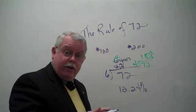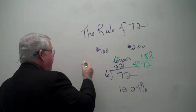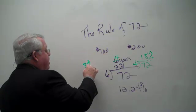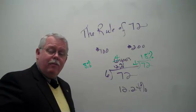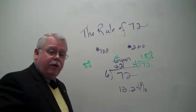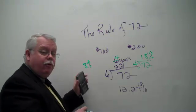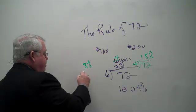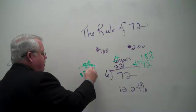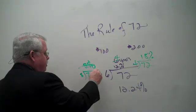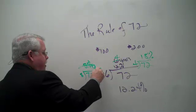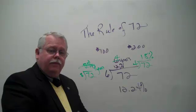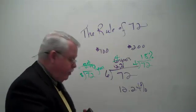We can turn it around the other way too. We can say: if I can earn 8% on my money, how long will it take my money to double? If I put $100 in the bank today earning 8%, how long will it take to grow to $200? Eight into 72 — it takes nine years. Just a real rough rule of thumb used when we're doubling stuff.